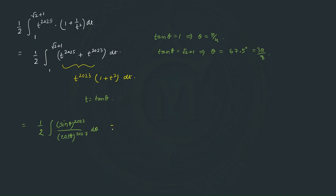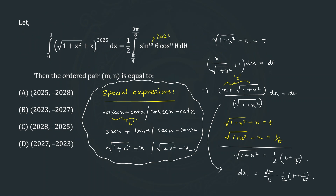So the integral becomes (1/2) times the integral from π/4 to 3π/8 of sin^2023 θ · cos^(−2027) θ dθ. Comparing with the target integral, m = 2023 and n = −2027. So the correct option in this case is option B. I hope you understood the concept behind this problem.